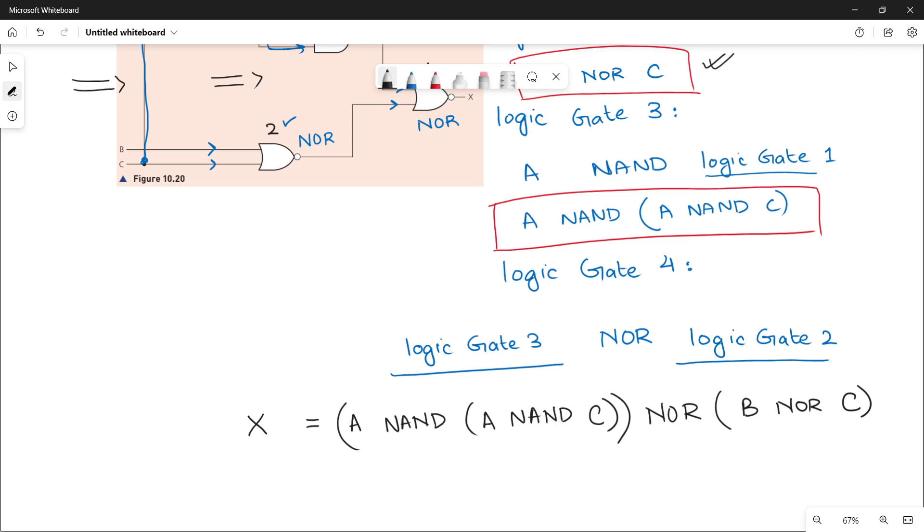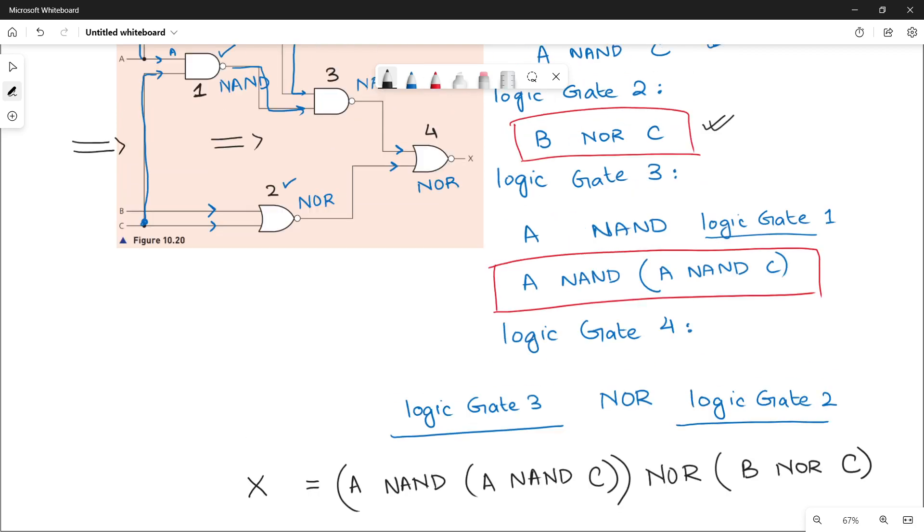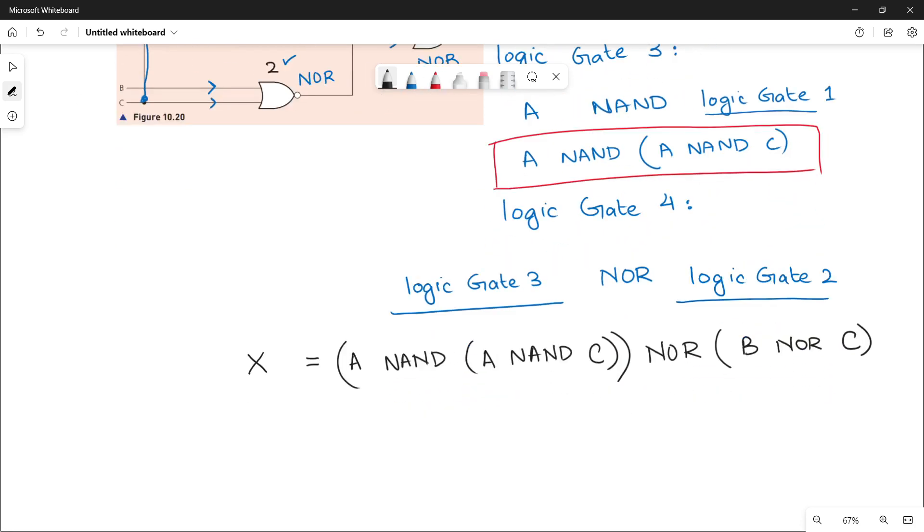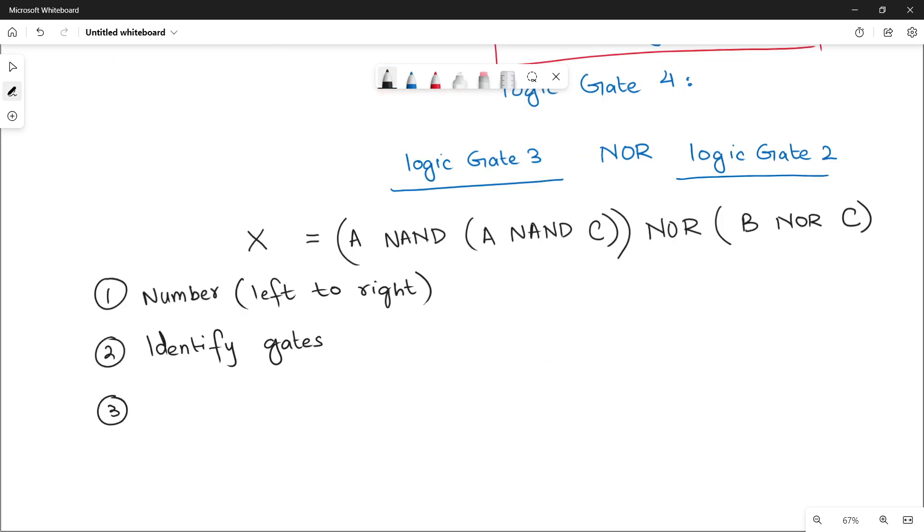Thank you so much for watching the video. I hope that you got the understanding of how to make a logic expression out of a logic circuit. Just remember the following steps. I'm summarizing everything. You have to number the logic gates first from left to right. Second thing, you have to identify what are the logic gates that are being used. Then number three, you have to write down expressions for each logic gate.